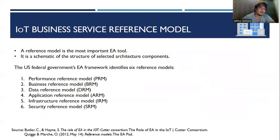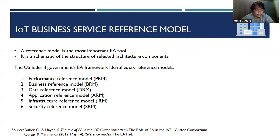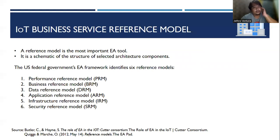Next is the IoT Business Service Reference Model. A reference model is the most important EA tool — it is a schematic of the structure of selected architecture components. In the U.S., they have set an EA framework with the following reference models: the Performance Reference Model (PRM), the Business Reference Model (BRM), the Data Reference Model (DRM), the Application Reference Model (ARM), the Infrastructure Reference Model, and the Security Reference Model.